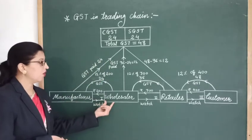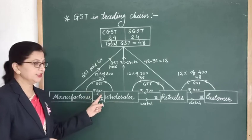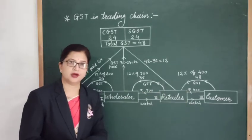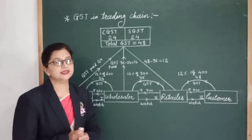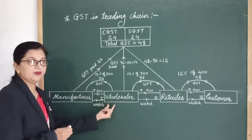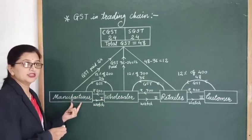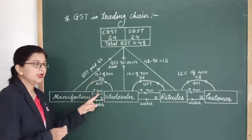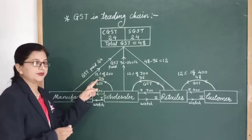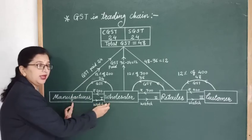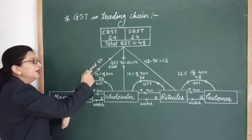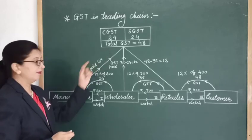The manufacturer sold the watch to the wholesaler at 200 rupees. At 12% GST on 200, that is 24 rupees. The manufacturer collected 24 rupees as GST from the wholesaler, and all 24 rupees are paid to the government by the manufacturer.